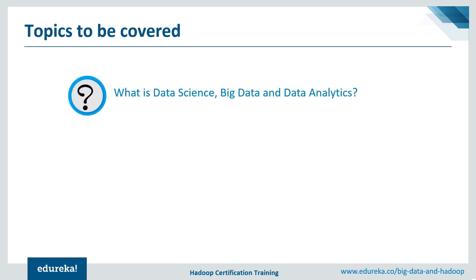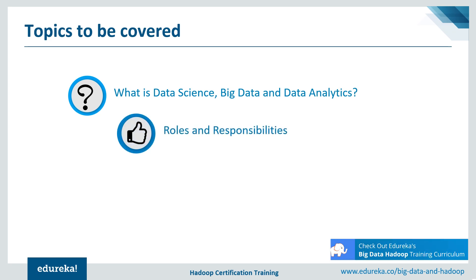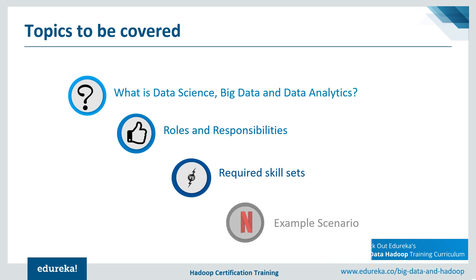First and foremost, I will tell you what is data science, big data, and data analytics. Next I will explain the roles and responsibilities of each of them — what does the data scientist, big data professional, and data analyst do. After that, you will see various skill sets required, and at the last I will take an example of Netflix and explain the individual job responsibilities and how they join forces in achieving a goal.